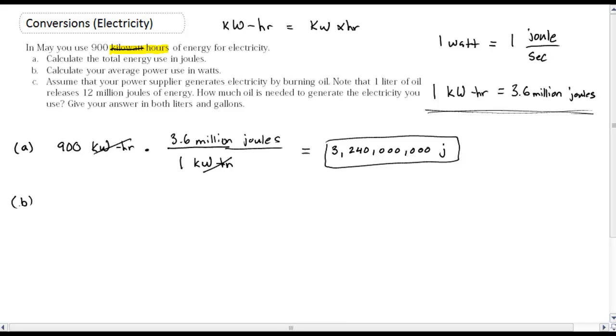So B, calculate your average power use in watts. And that's for the month. So first of all, how many days in May? Remember, May has 31 days. So if I'm using 3,240,000,000 joules over the course of 31 days. Now this is in joules per day, but they want it in watts, right? Remember watts is what? If I come up to this conversion on top, watts is joules per second. I have joules per day, right? So I need to get rid of the days and get to seconds.